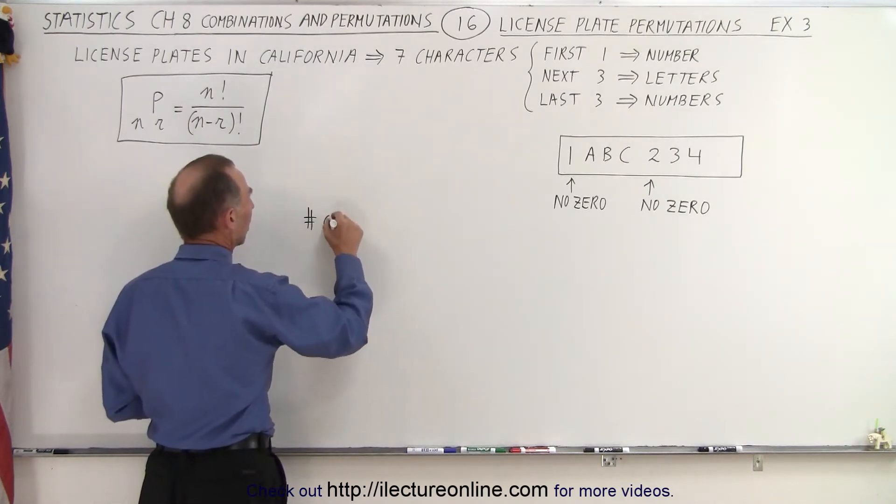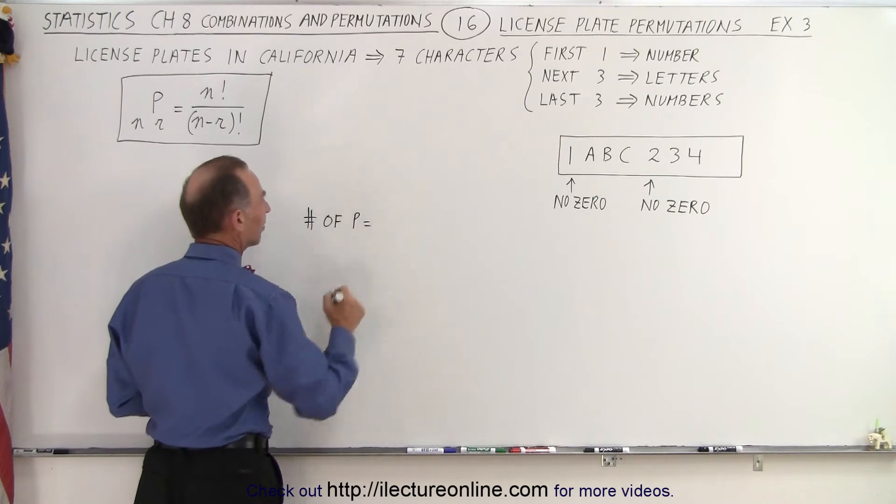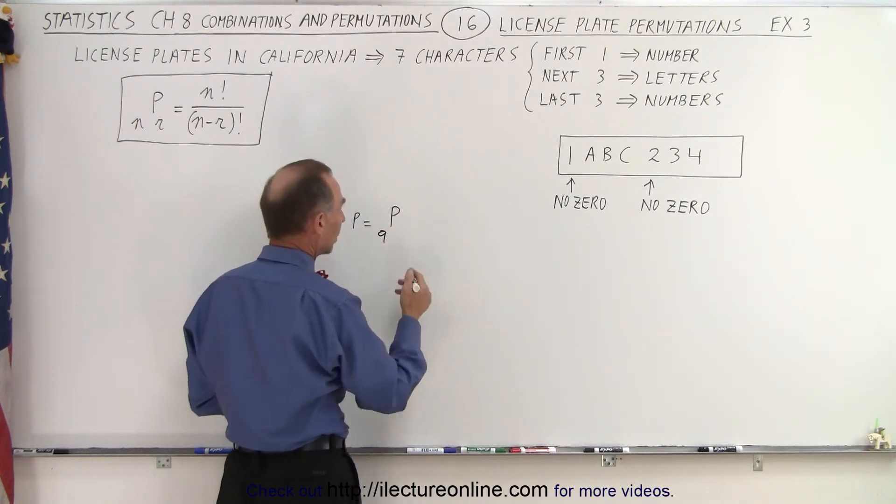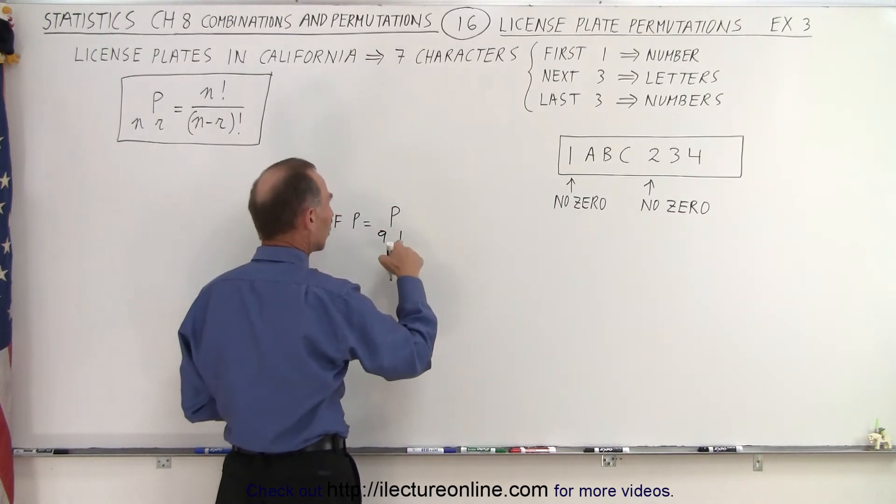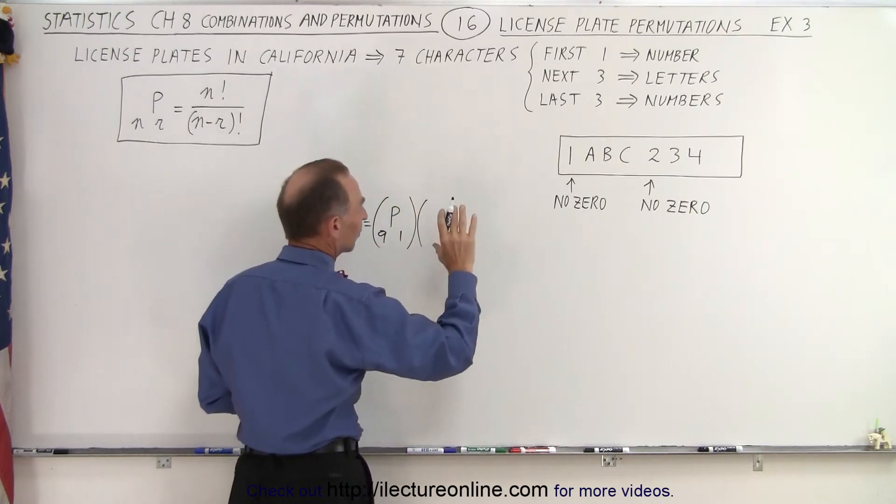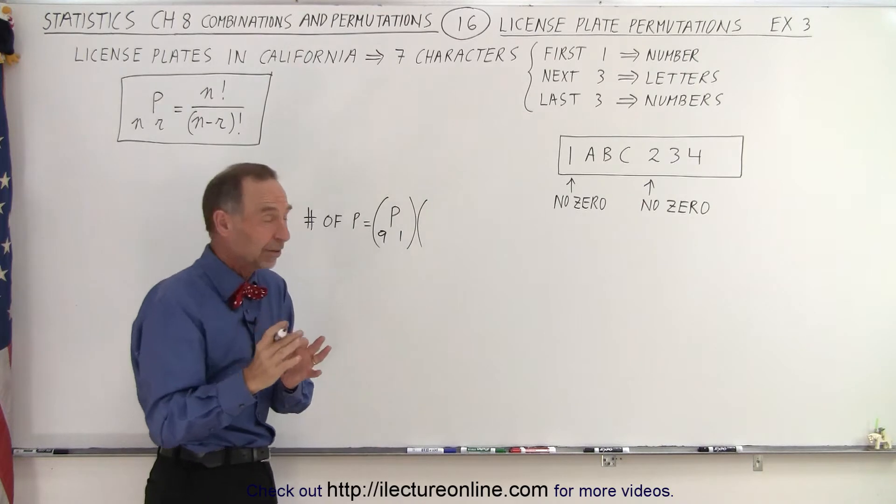So the number of permutations is equal to, for the first one, it's going to be P. There's only nine possibilities if we ignore the zero, and there's only one letter to be picked. And so we're going to multiply that times the next three, but we have to take it one at a time.